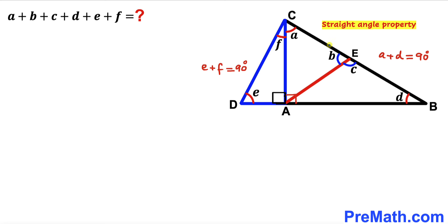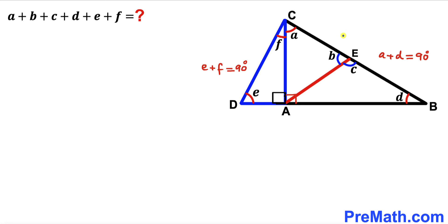Finally, let's recall that this whole angle is a straight angle. The sum of these two angles must equal 180 degrees. So therefore angle B plus angle C must equal 180 degrees.